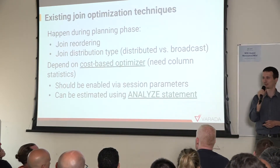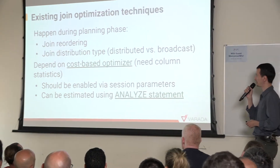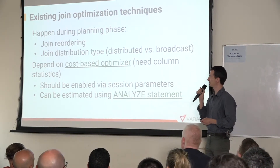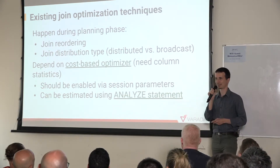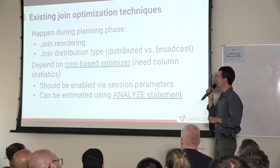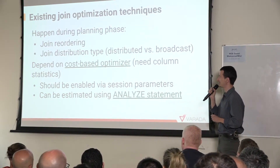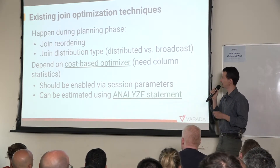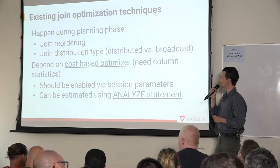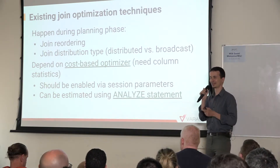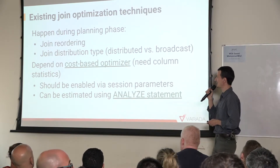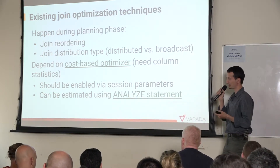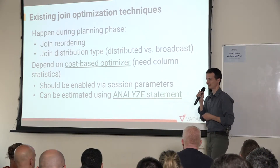Presto currently supports a few optimizations for joins which happen during the planning phase of the query. The most important ones are join reordering and join distribution type selection, both of which can be enabled or disabled manually. Interestingly, they can also be enabled automatically using the cost-based optimizer, a quite new feature in Presto. It requires column statistics, which can be provided by the connector — currently the Hive connector — or collected at runtime using the ANALYZE statement.